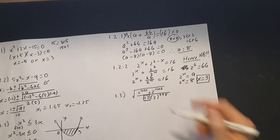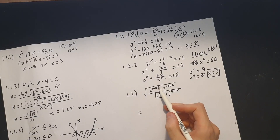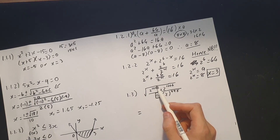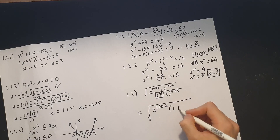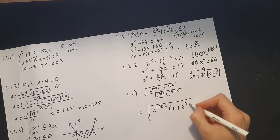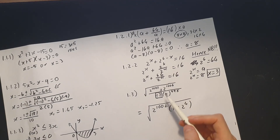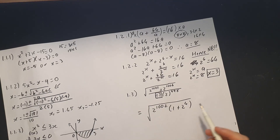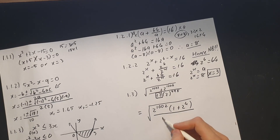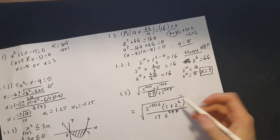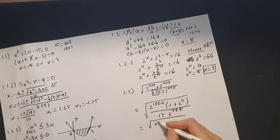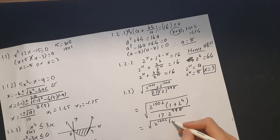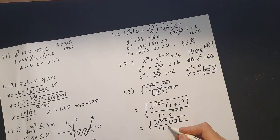I'll take out the largest possible value from the top: 2^1002. Writing √(2^1002), what's left: 6 − 2 = 4, and then 17 · 2^998. Notice 2^4 = 16, and 16 + 1 = 17. So we have 2^1002 · 17 over 17 · 2^998.